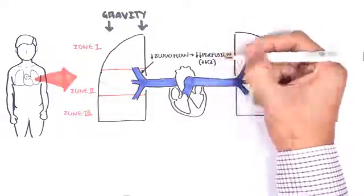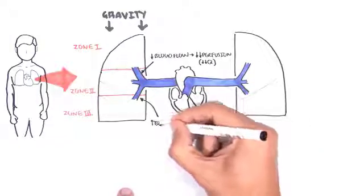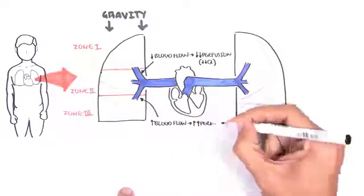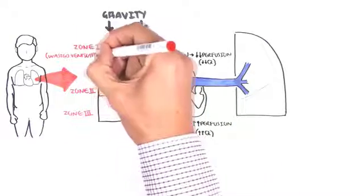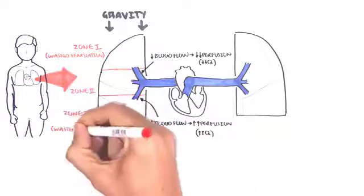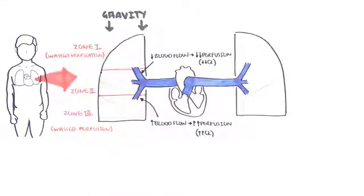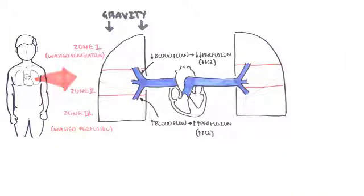Perfusion is represented by Q. This means blood flow to the base of the lungs will have increased perfusion — Q is increased. Thus, at the apex of the lung we have wasted ventilation: all the gas going to the alveoli is not exchanged efficiently because there is less perfusion. At the base we have wasted perfusion — lots of blood flow but not as much ventilation. Importantly, both ventilation and perfusion are actually greater at the base of the lungs than at the apex.